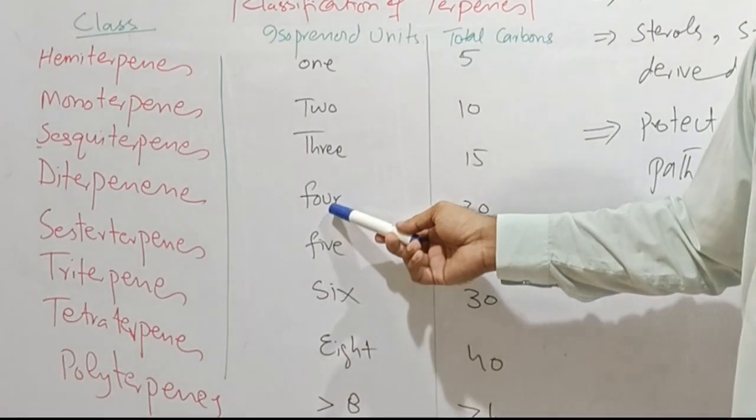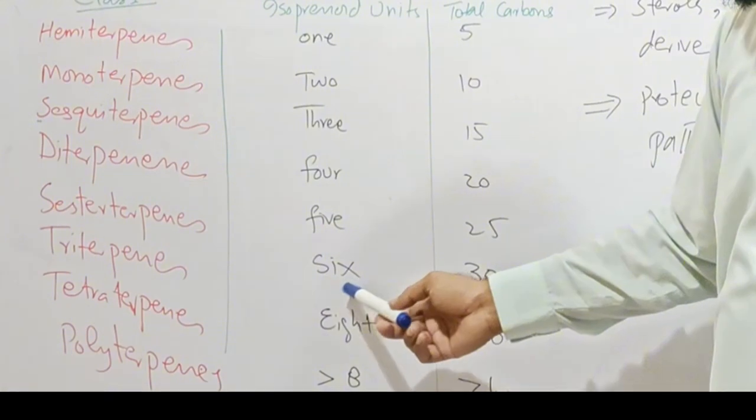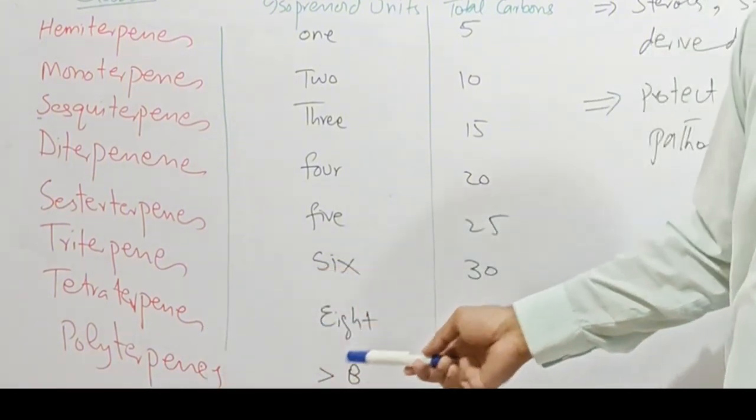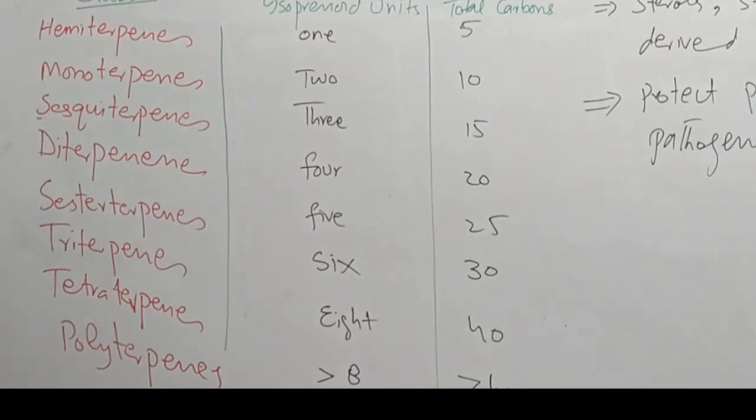Diterpene contain four isoprenoid unit and sesterpene five, triterpene six, tetraterpene eight and polyterpene contain more than eight isoprenoid unit.